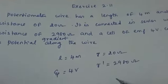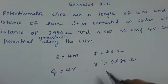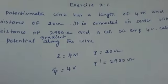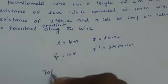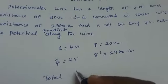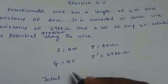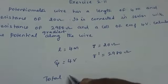Now we have to find out the potential gradient. What is the total resistance here? The total resistance, because both the potentiometer wire and the resistance are in series connection.